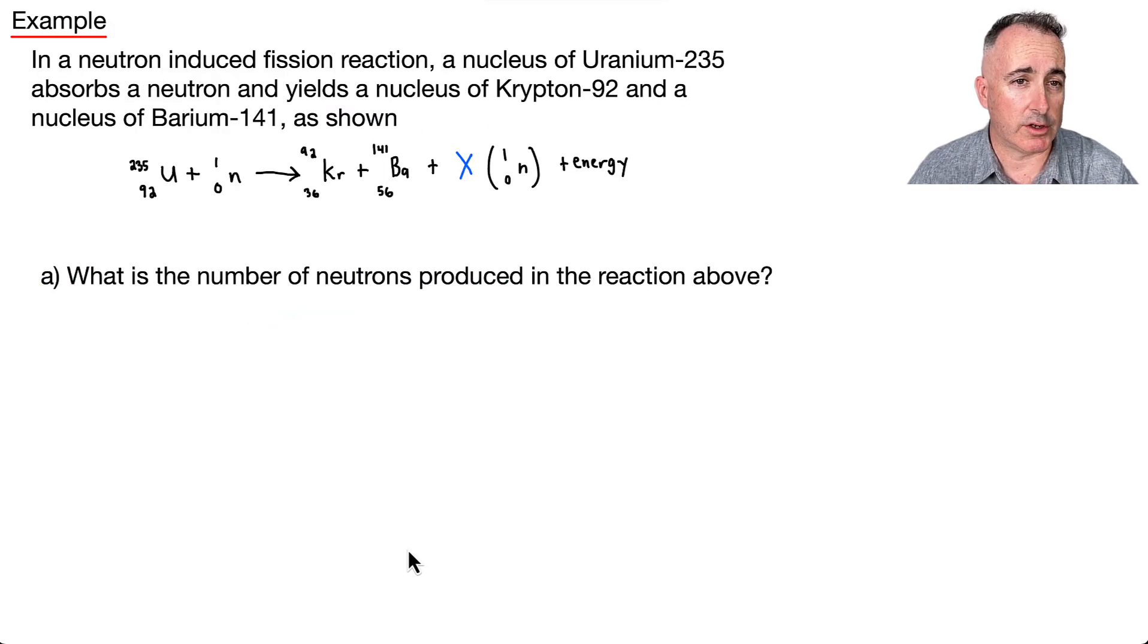We have an example now where we've got a neutron-induced fission reaction. So we have uranium-235, and you throw a neutron at it. What does it do? It makes krypton-92 and barium-141. And then we're going to be told we don't know how many neutrons are here. But of course, it also makes energy. So the first part is, what's the number of neutrons produced? In other words, what's this number right here? I think what helps to do is just to consider what we're looking at here. Maybe we'll look at the left side right here. Let's look at the number on the top. So the total nucleon number is 235 plus 1 is 236. Bottom number is 92. Well, that's supposed to become, let's just count up everything that we have so far.